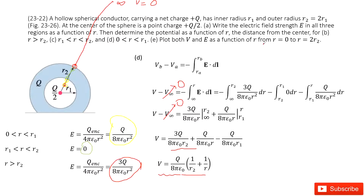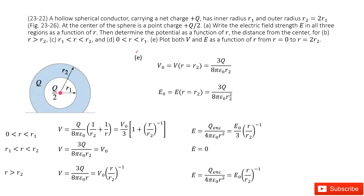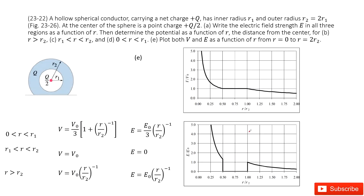Next, we need to plot V and E as a function of R, from R equal to zero to R equal to two times R2. We write down the functions we just derived for V and E at different locations. Since these functions look a bit complicated to plot directly, we replace the constant terms — like Q divided by 8 pi epsilon naught — with defined constants. When R equals R2, we define the potential as V naught and the electric field as E naught. Then we re-express the functions in terms of V naught, E naught, and R, and plot the two resulting pictures.